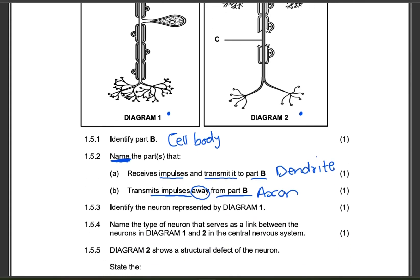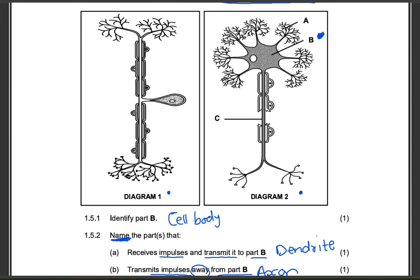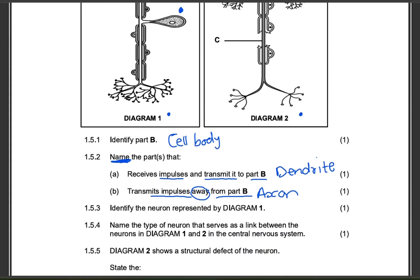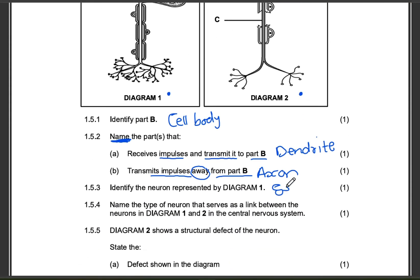Identify the type of neuron represented by diagram one. The type of neuron represented by diagram one — the one with the cell body in the middle — that's the sensory neuron. So the answer to 15.3 is the sensory neuron.